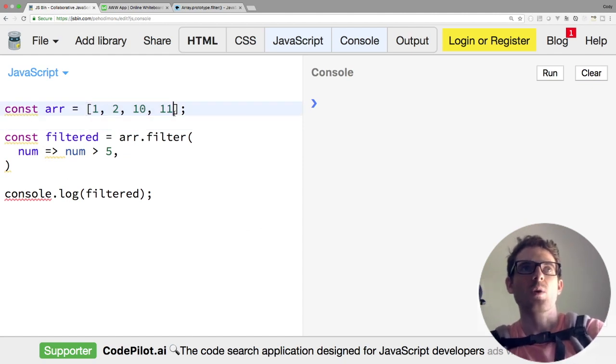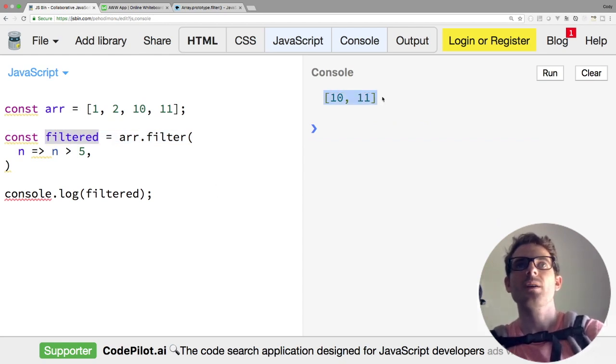Right here, we have the exact same array: 1, 2, 10, and 11. And we're passing a callback function which is going to do the exact same thing. So give me everything that is greater than 5. So after running this, notice that we get back a filtered object which has an array of 10 and 11.